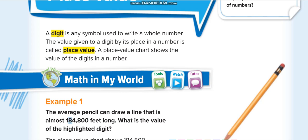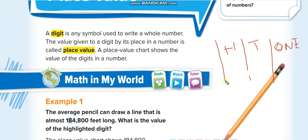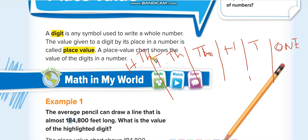First of all, you guys have to understand what place value is. Basically all of you know this: ones, tens, hundreds, thousands, ten thousands, and hundred thousands. You guys know these, right? And then here we have millions, and the same pattern continues with ten millions and hundred millions.